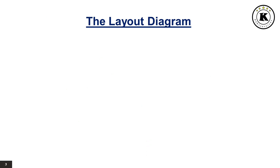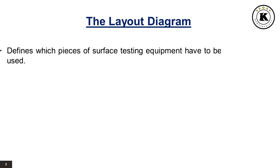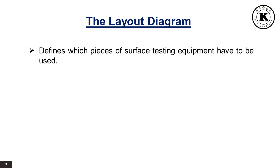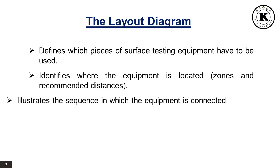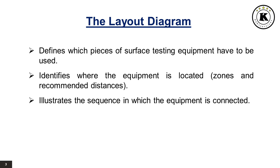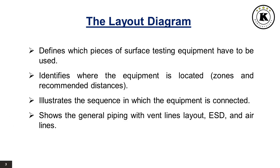The layout diagram defines which pieces of surface testing equipment have to be used, and identifies where the equipment is located according to zones and recommended distances. It illustrates the sequence in which the equipment is connected, and shows the general piping with vent lines layout, emergency shutdown, and air lines.